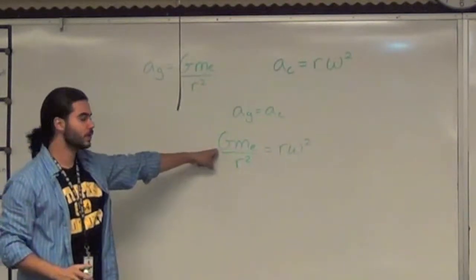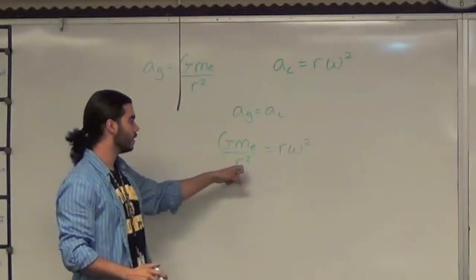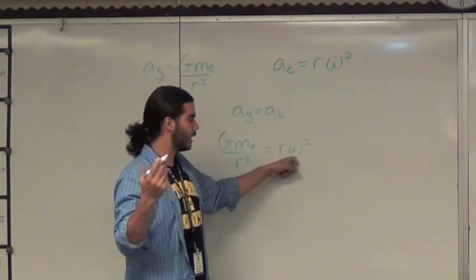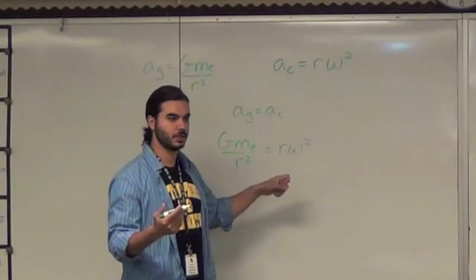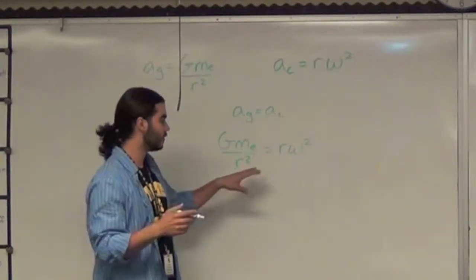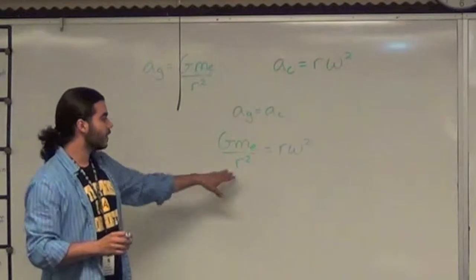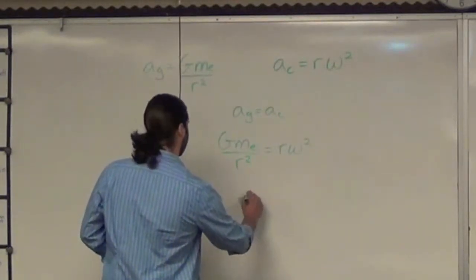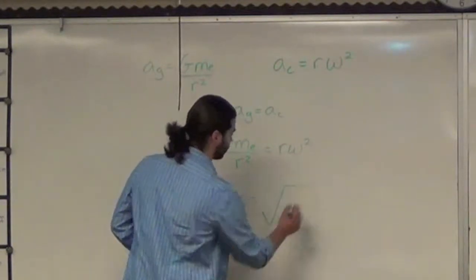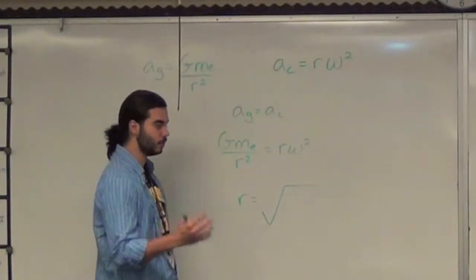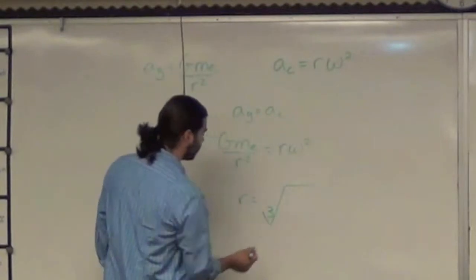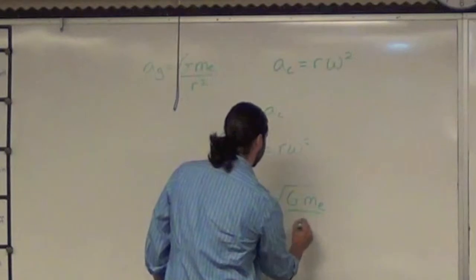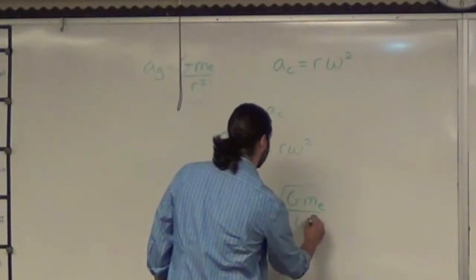We know the gravitational constant. We know the mass of the Earth. Radius is what we're looking for. And we know that, again, the angular velocity needs to be one rotation per day. We know all of these variables except for r, so we can solve for r. If you solve this equation for r, what you end up getting is r is equal to the cubed root of g times the mass of the Earth divided by omega squared.